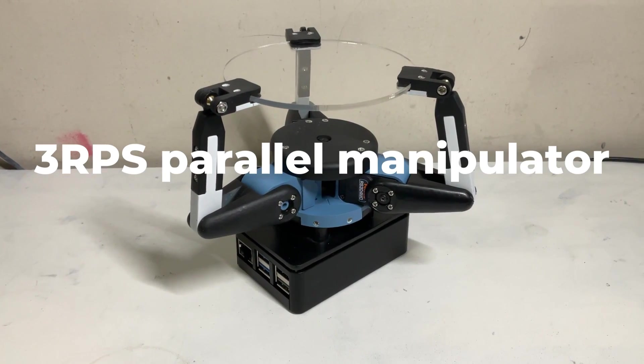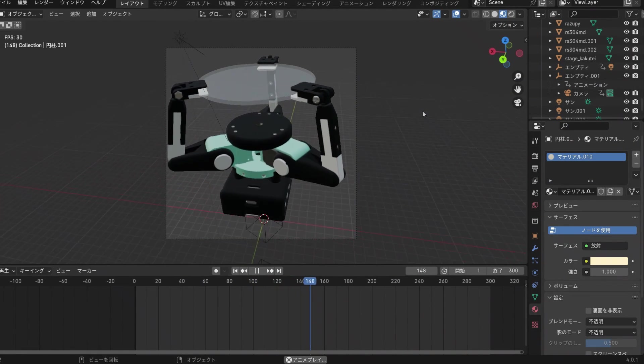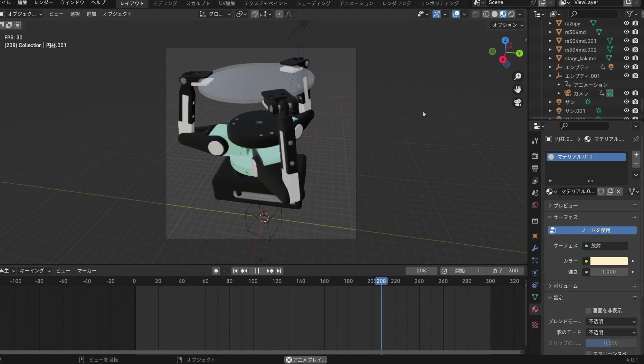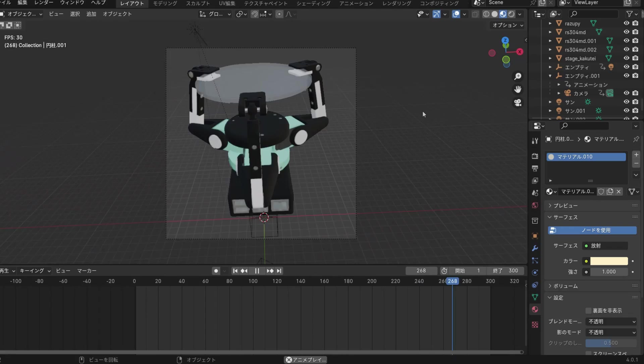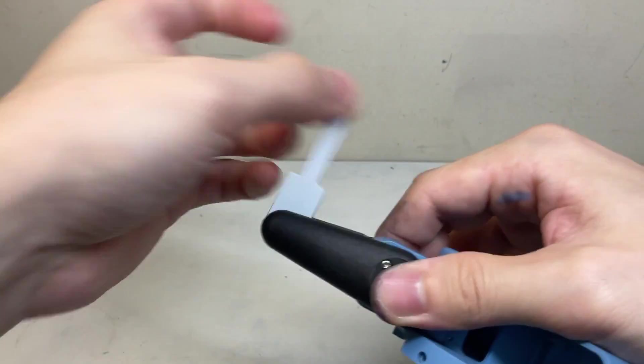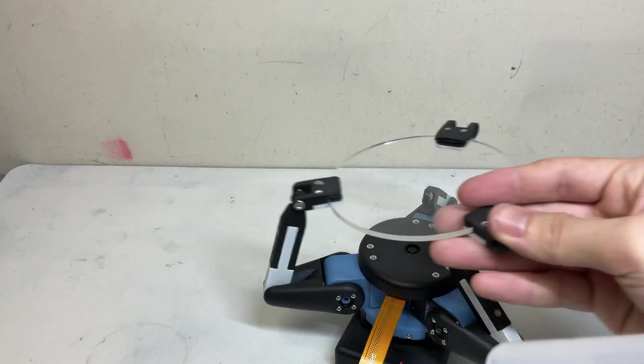What kind of mechanism is needed to achieve such movement with only three motors? One answer is the 3RPS parallel manipulator. This mechanism has three legs leading from the platform to the motors, and each leg consists of two links. The links are connected to each other by pin joints, and the links are connected to the platform by ball joints.